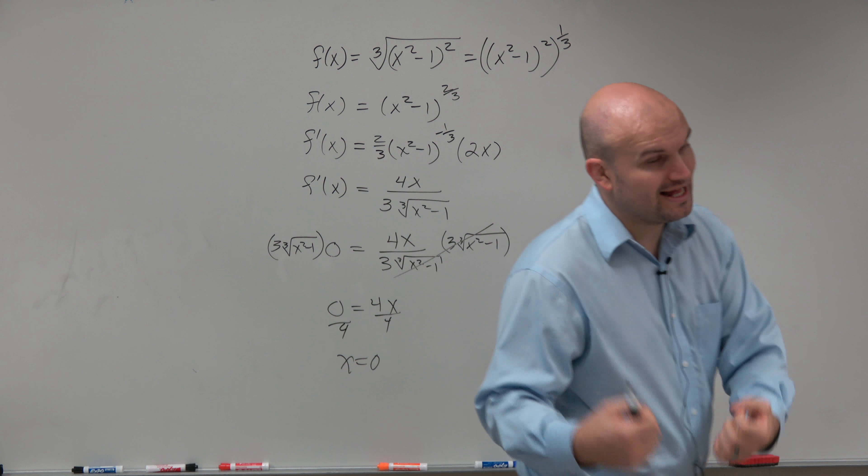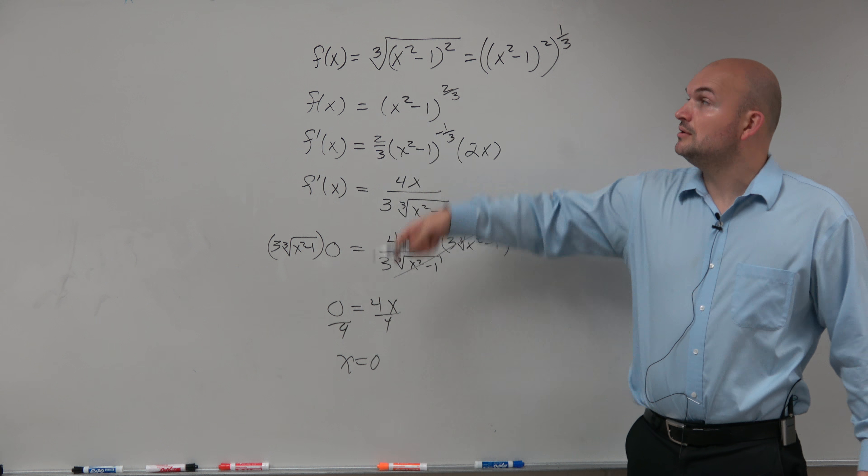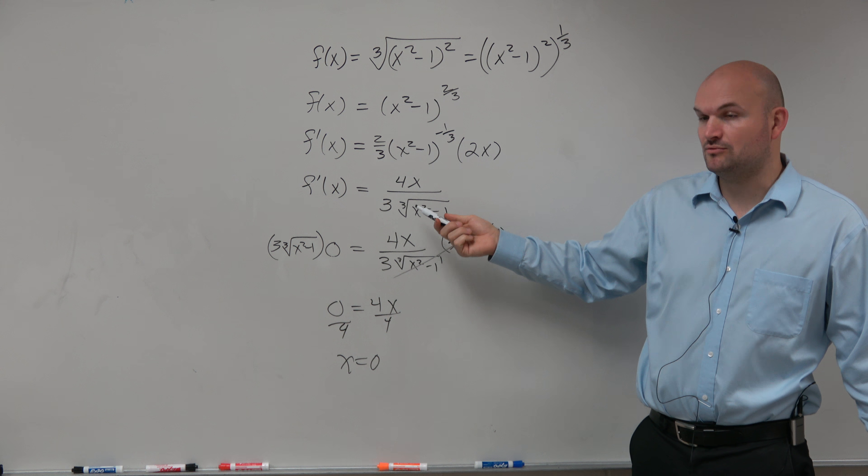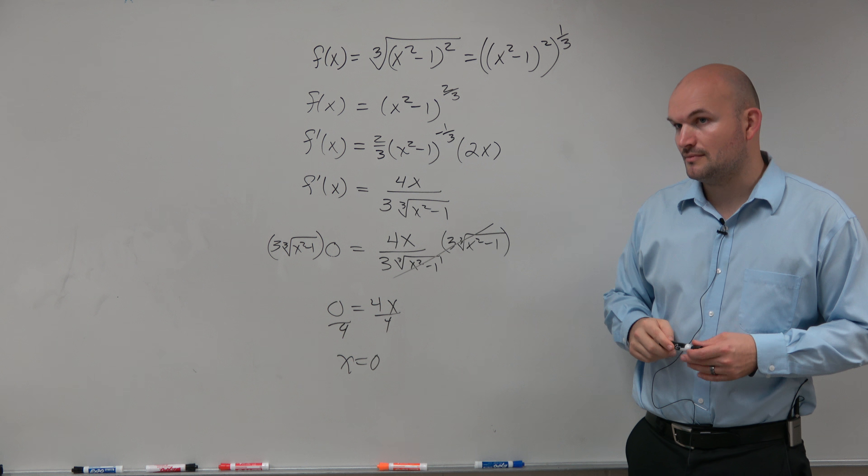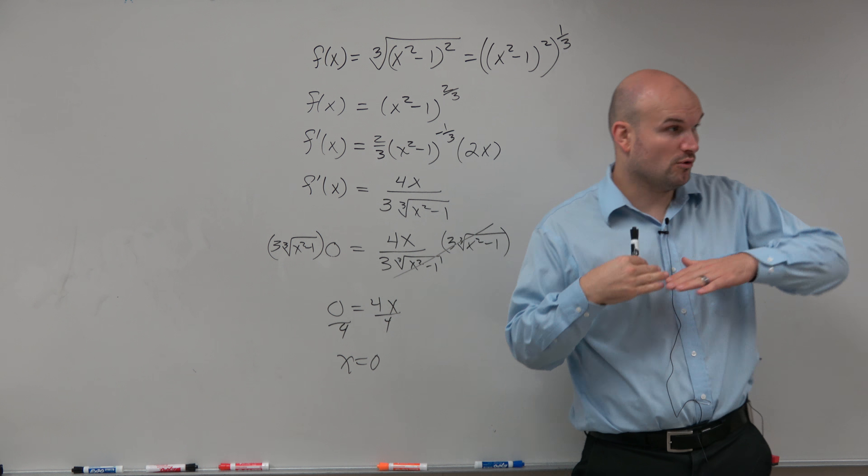So what that means is, at the value of x = 0, the derivative is going to be equal to 0. Right? That's when you have the horizontal tangent.